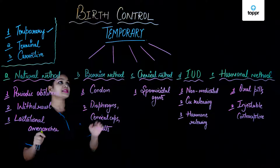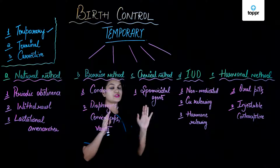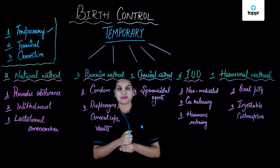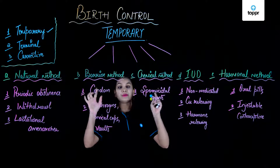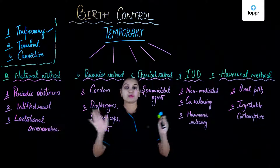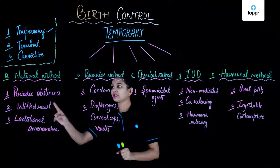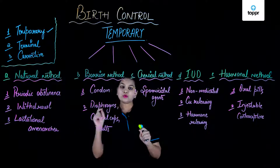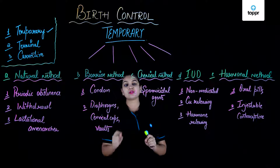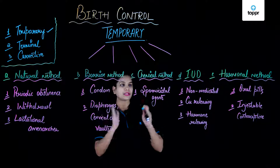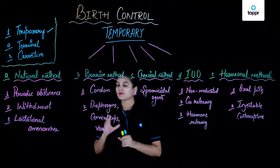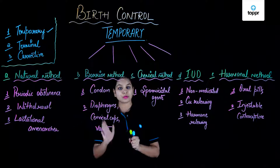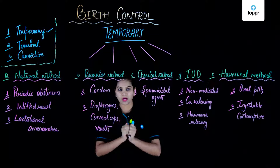Here you can see some of the temporary methods used to prevent unwanted pregnancy. Within the temporary method there are various approaches, the first one being the natural method. All these methods aim towards the same thing — to avoid pregnancy — but they do it in different ways. In the natural method, the aim is to prevent the meeting of sperm and ova.